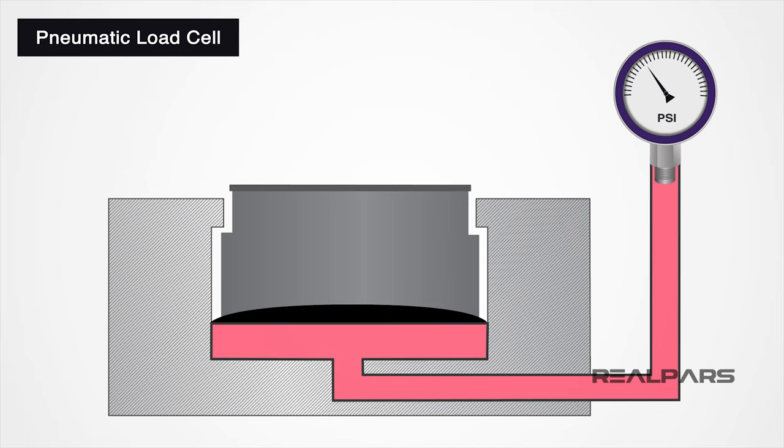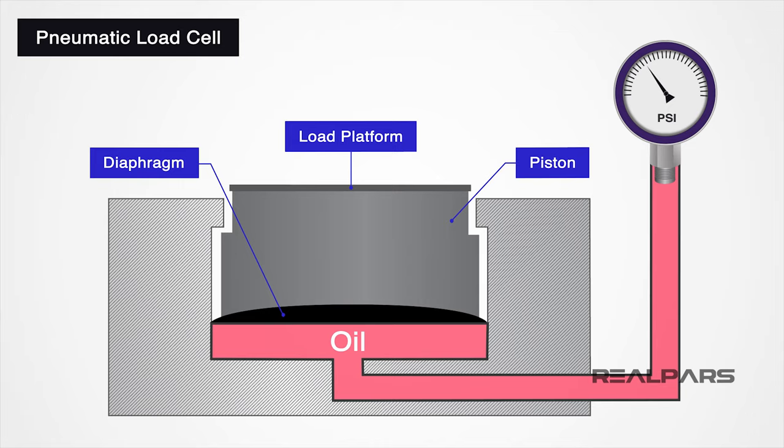A hydraulic load cell is consisting of an elastic diaphragm, a piston with a loading platform on top of the diaphragm, oil or water that will be inside the piston, and a Bordon tube pressure gauge.